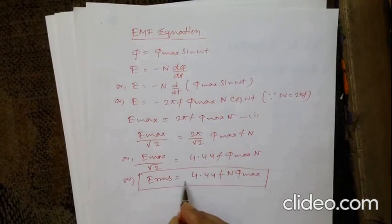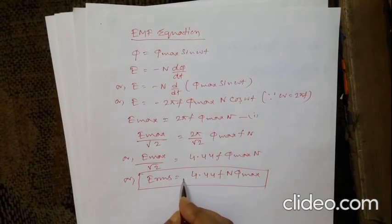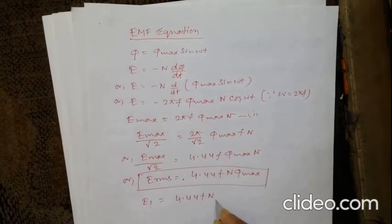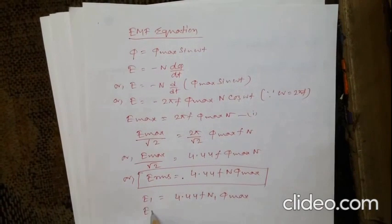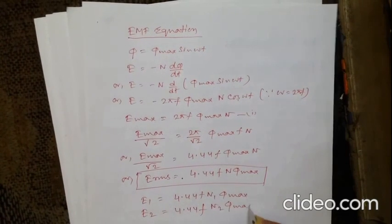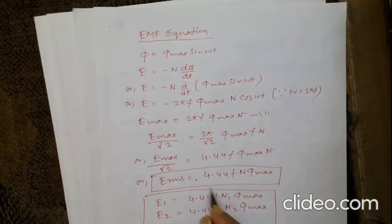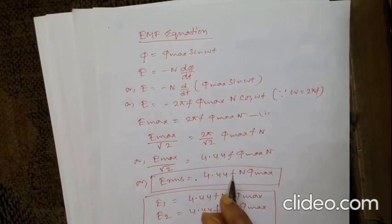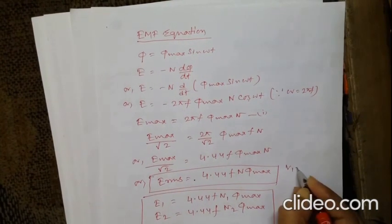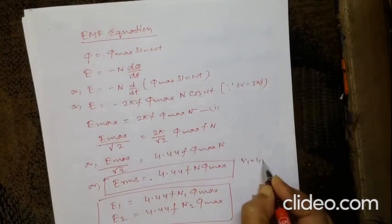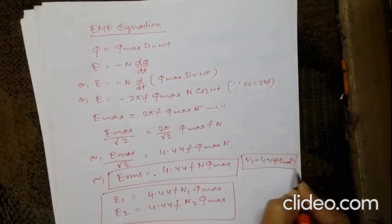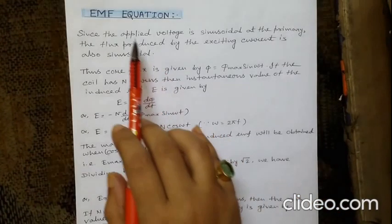This is the EMF equation. The induced voltage at the primary is E1 = 4.44·f·N1·Φmax, and similarly at the secondary E2 = 4.44·f·N2·Φmax. Since the induced voltage in the primary is equal and opposite to the applied voltage, we can write V1 = 4.44·f·N1·Φmax.